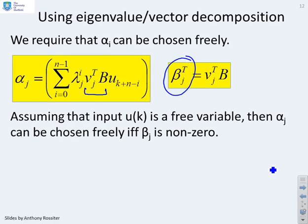We can assume that the input u is a free variable, the input we can choose. So alpha j can be chosen freely if, and only if, this beta j is not 0.